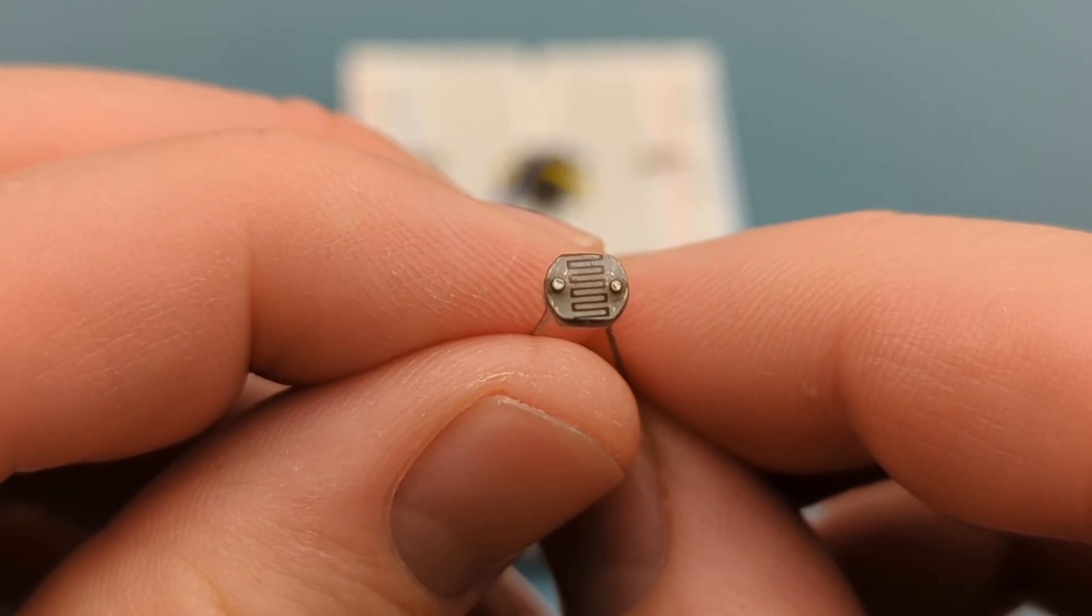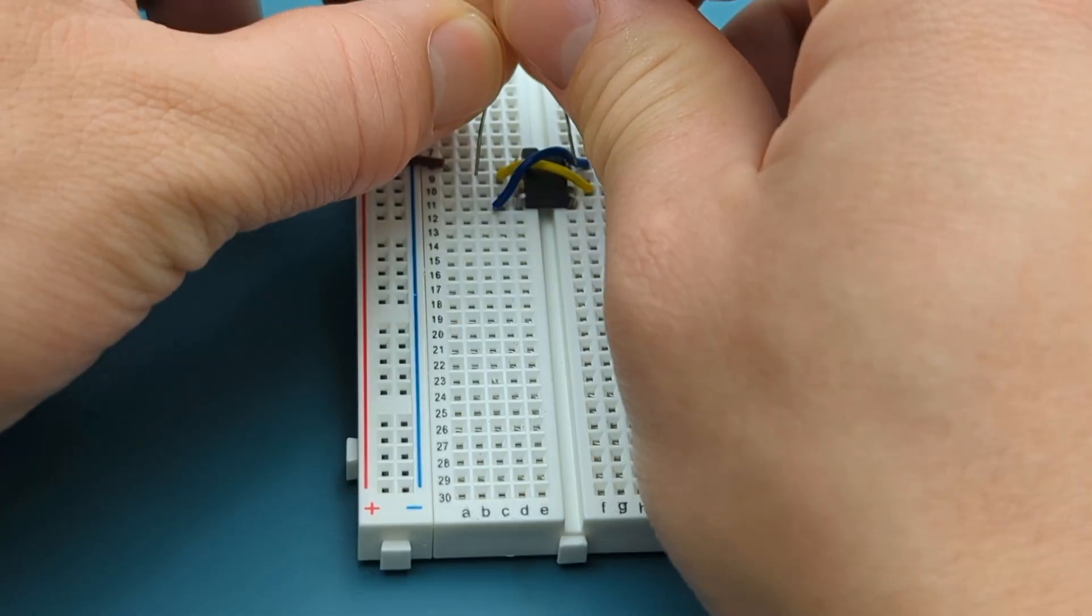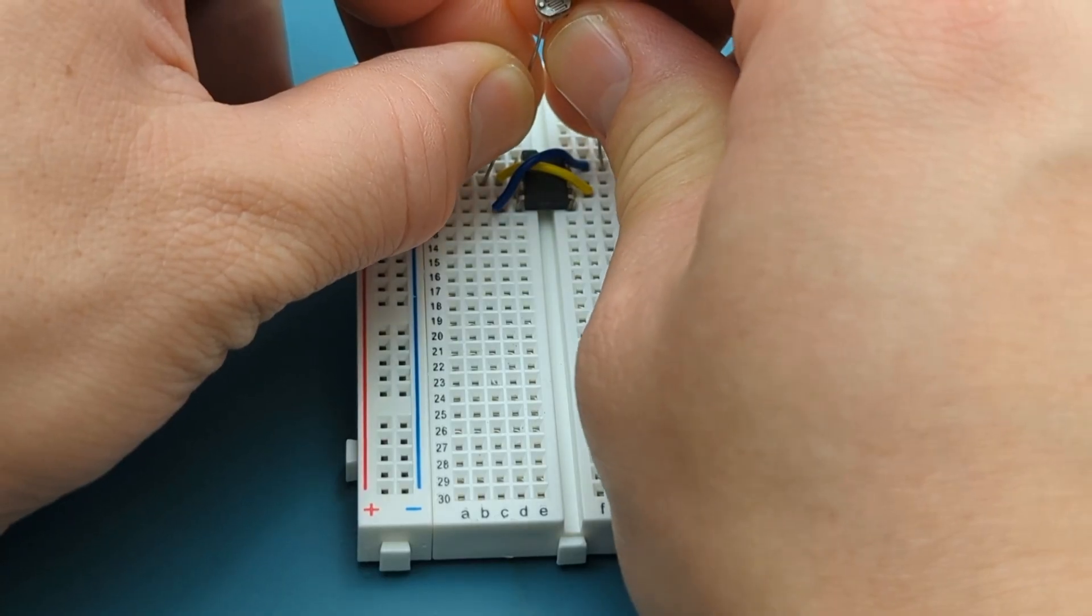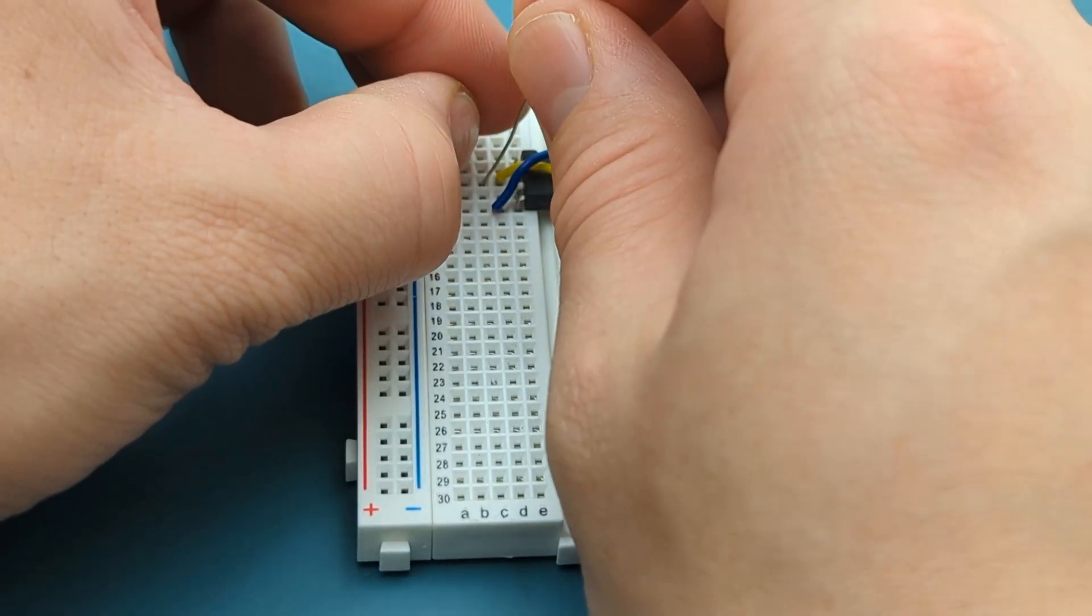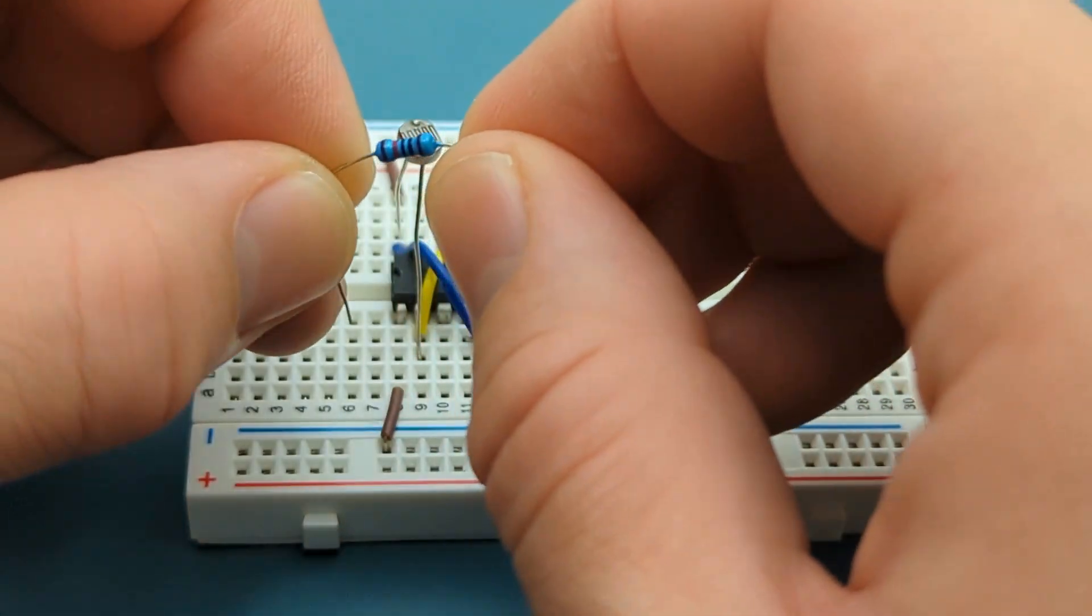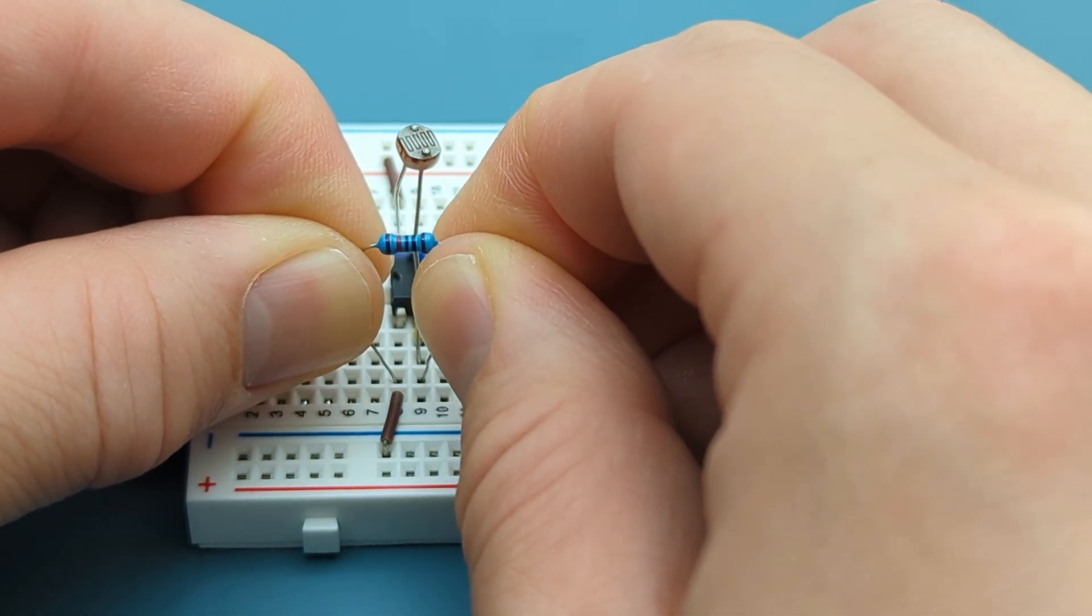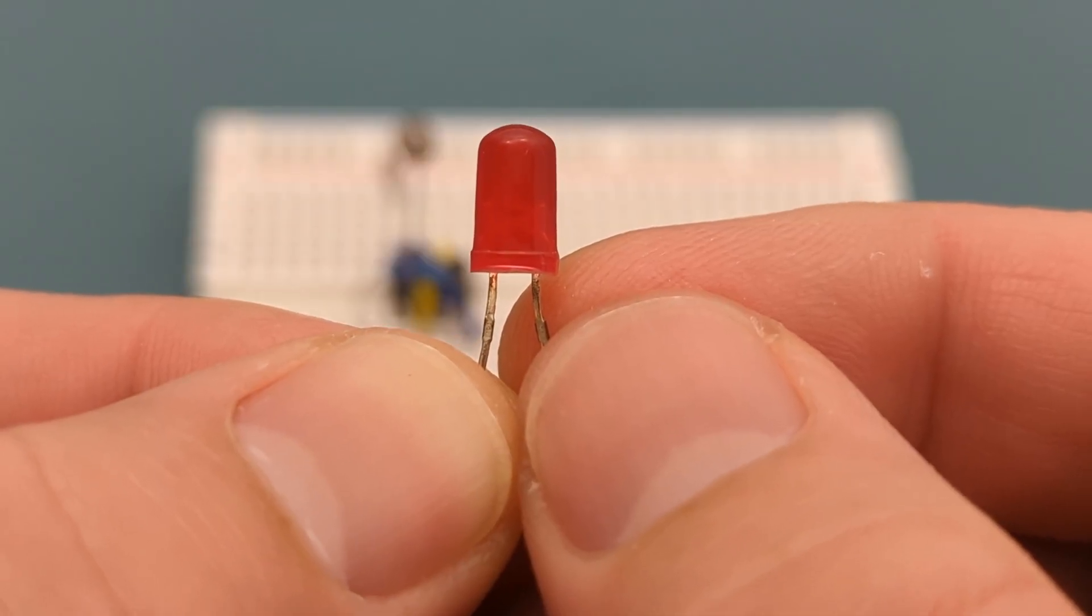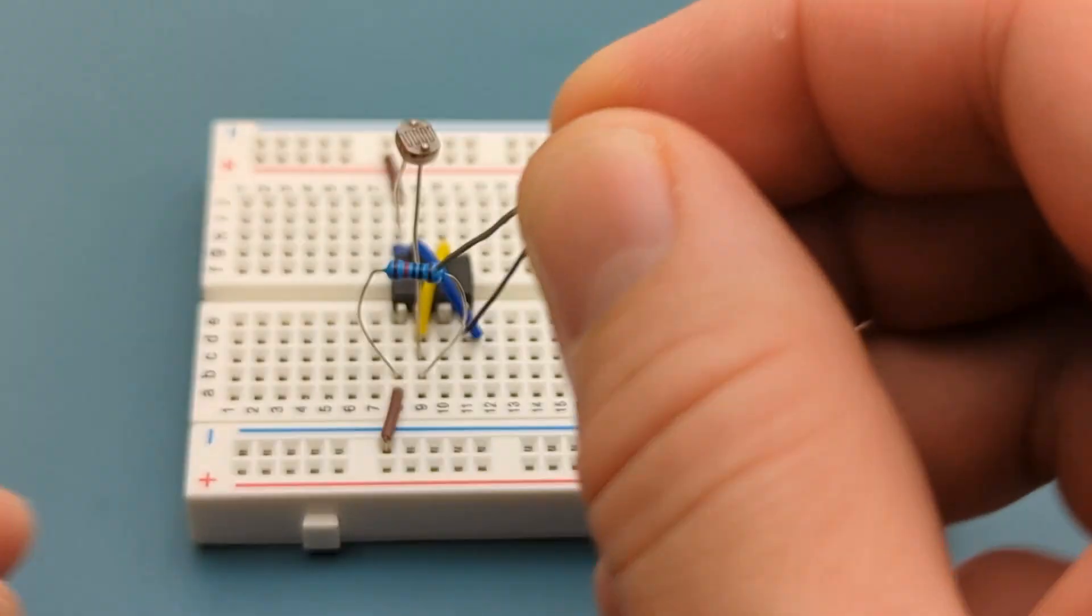Insert the LDR into pin two or trigger and pin eight or VCC. Bend the ends of a 10,000 ohm resistor. Insert the 10,000 ohm resistor into pin one or ground and pin two or trigger. Insert an LED into pin three or output and the negative rail. The positive lead is in pin three.